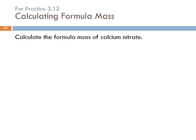Let's do an example: calculate the formula mass of calcium nitrate. We're going to throw in a little nomenclature practice. We need the formula — what's the formula for calcium nitrate? First question: what kind of compound is it — ionic, molecular, or acid? It's ionic because calcium is a metal.